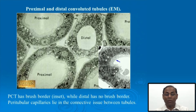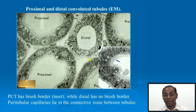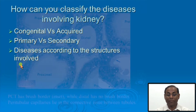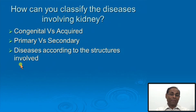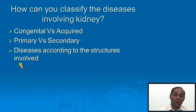The tubular system consists of two types: proximal tubules and distal tubules. Proximal tubules have a large surface area with a brush border to absorb proteins and other molecules, while distal tubules do not have a brush border. Between the tubules are the peritubular capillaries. This summarizes the kidney structure in relation to its functions, and now we enter into diseases involving the kidney.